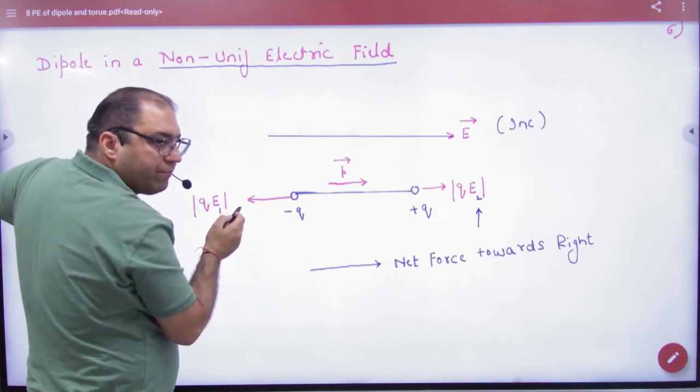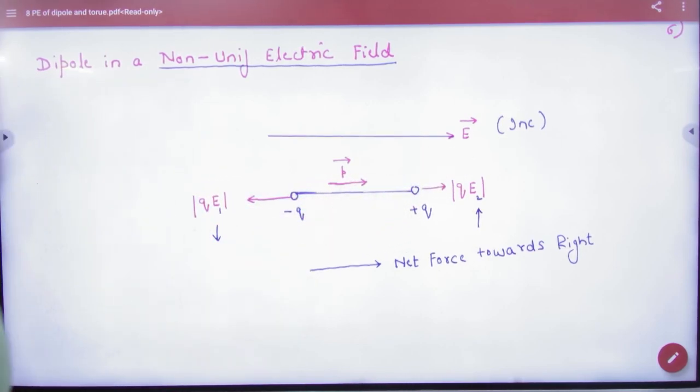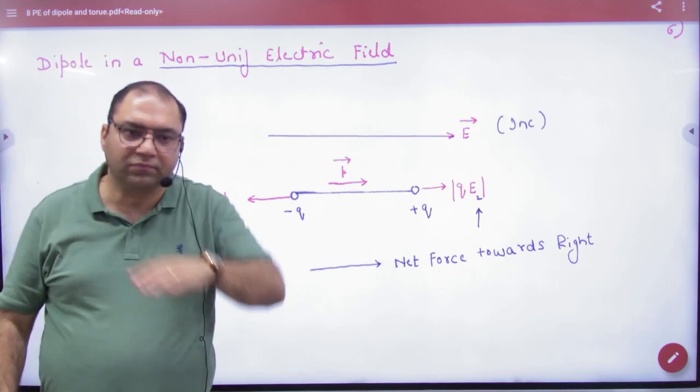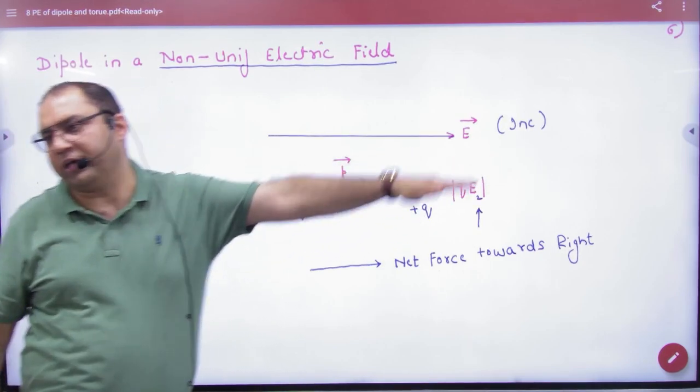So what will happen with dipole? Right to move the direction of the right side. Because that force is small here. It won't happen because there are forces in one line. So its movement is right to move the direction of the right side.